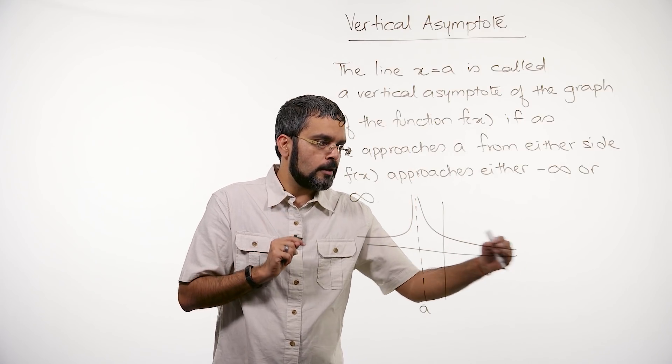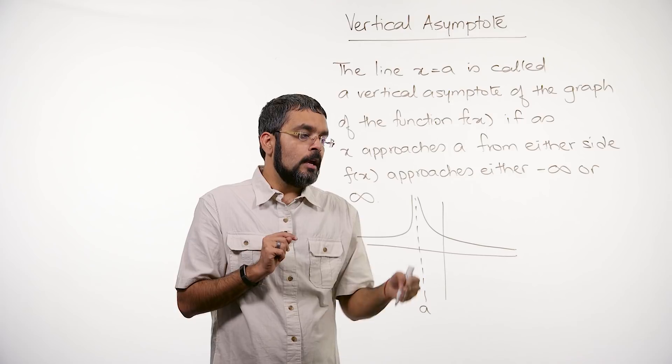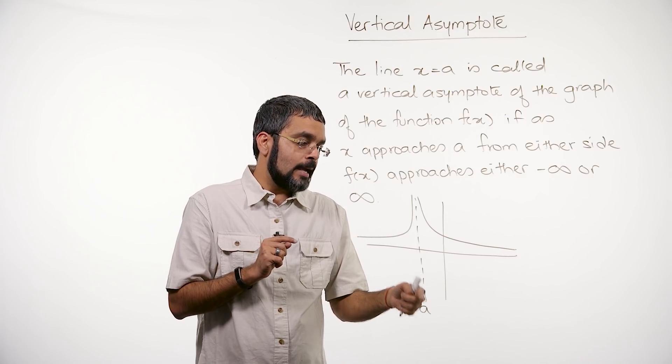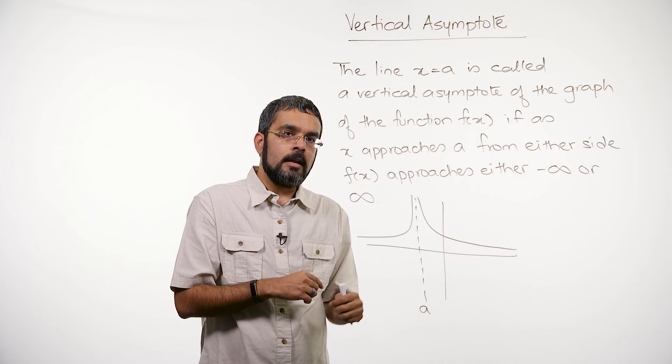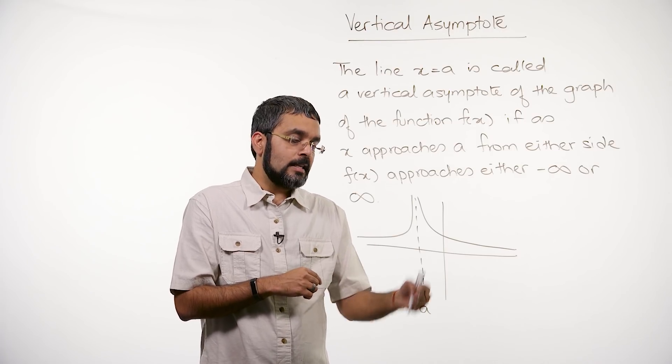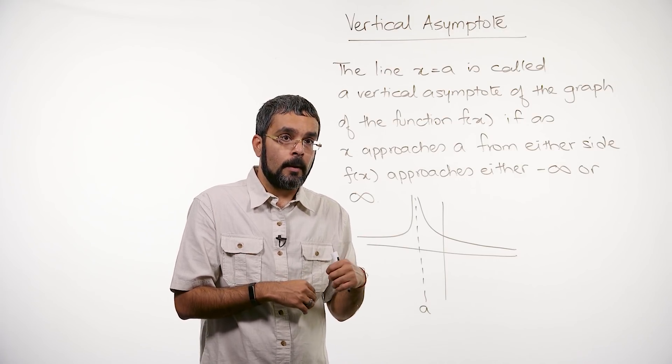And as I approach from the right, my function still is approaching positive infinity. So in this case, I could say that as x approaches a, my function approaches infinity. And so a would be a vertical asymptote. So x equals a would be a vertical asymptote for my function.